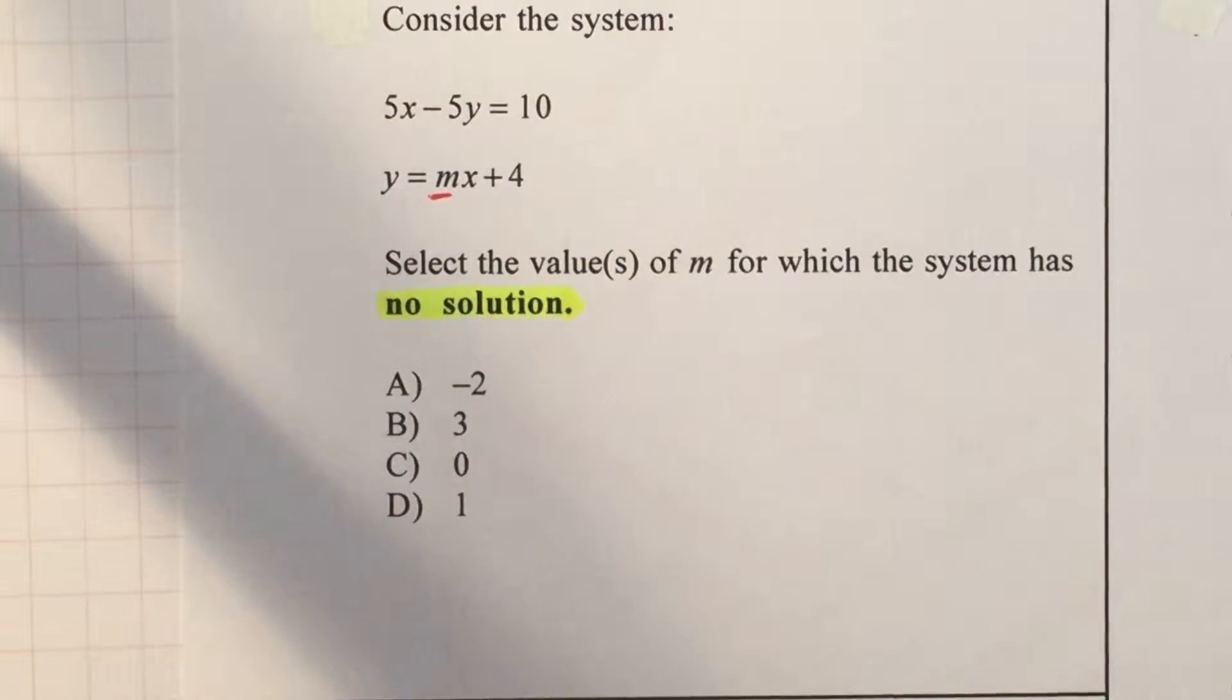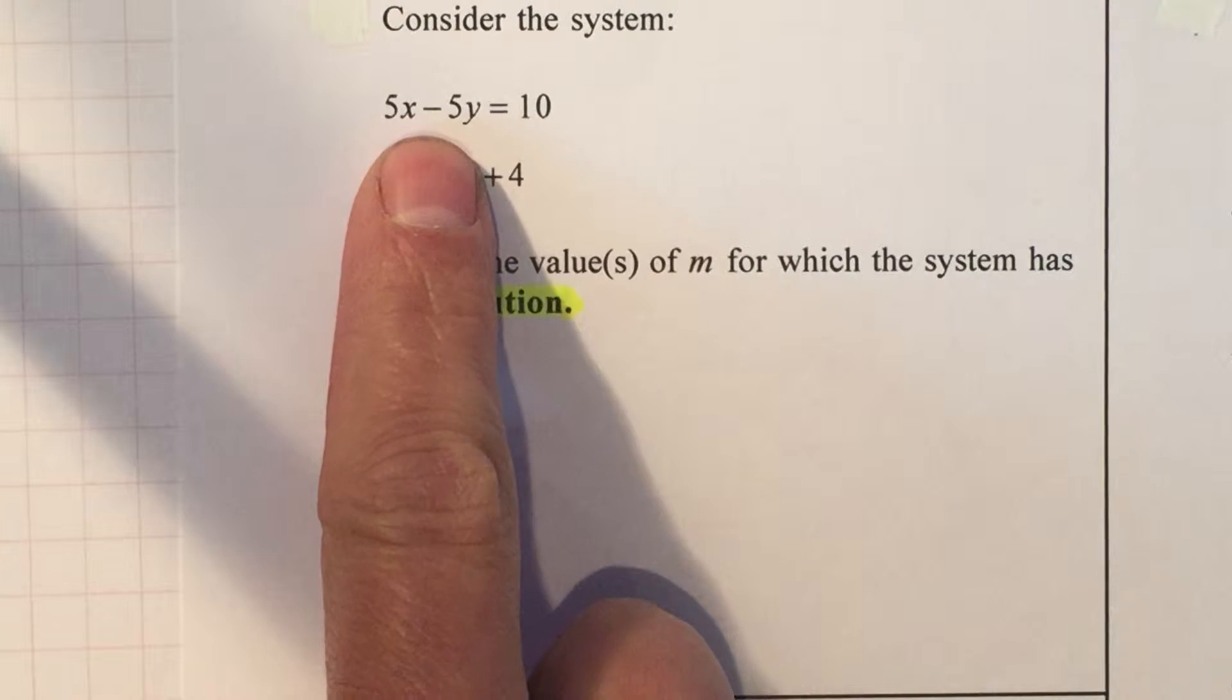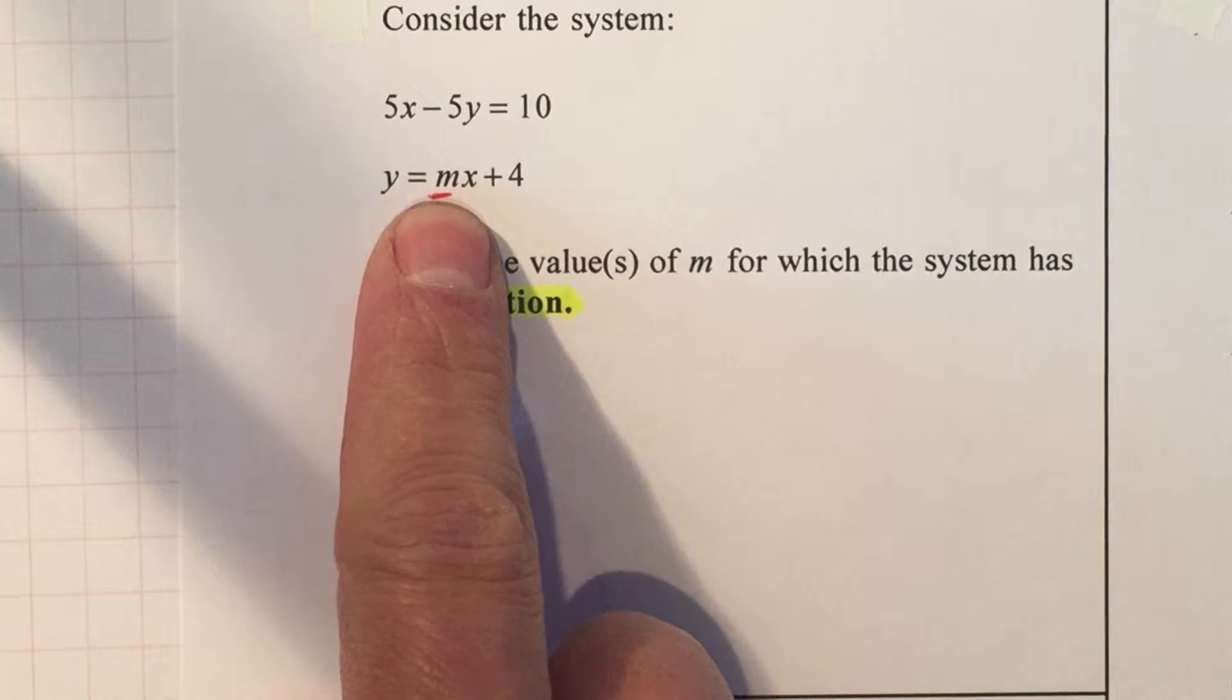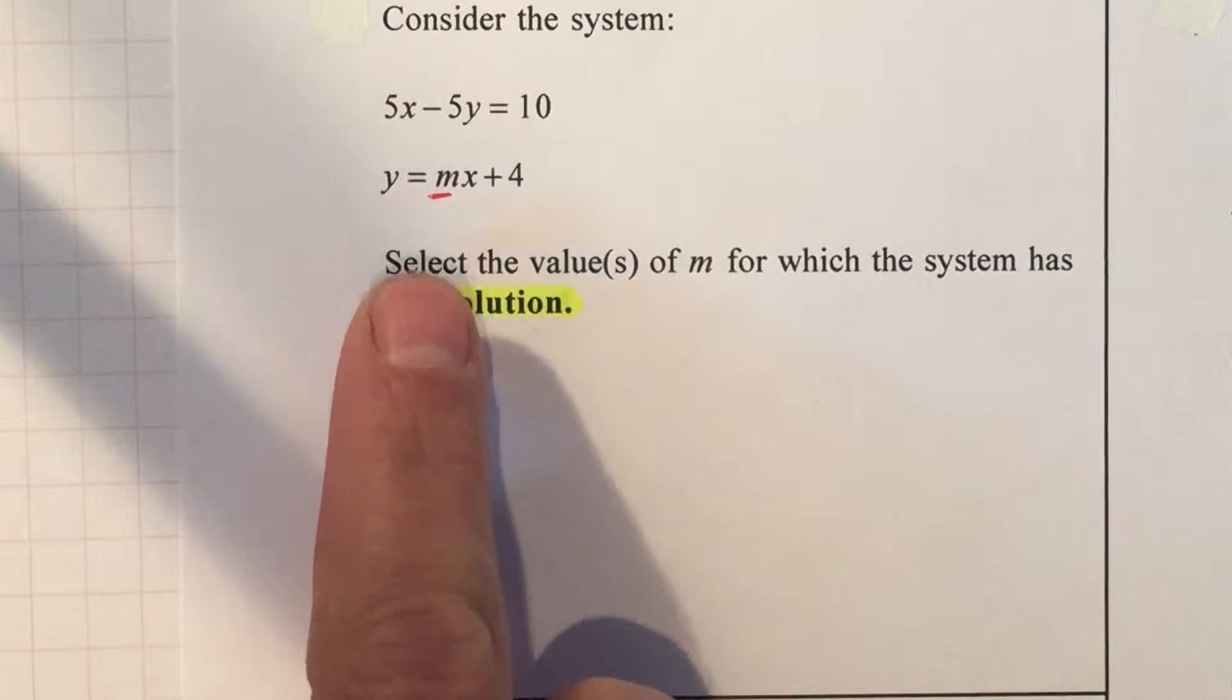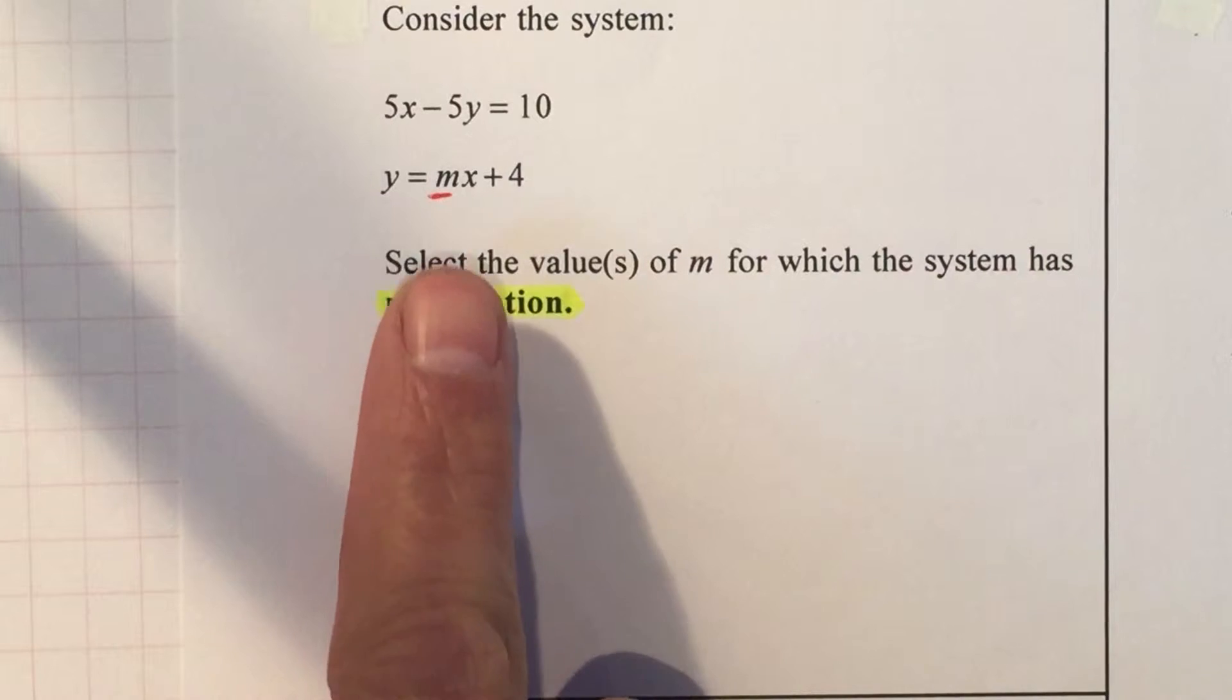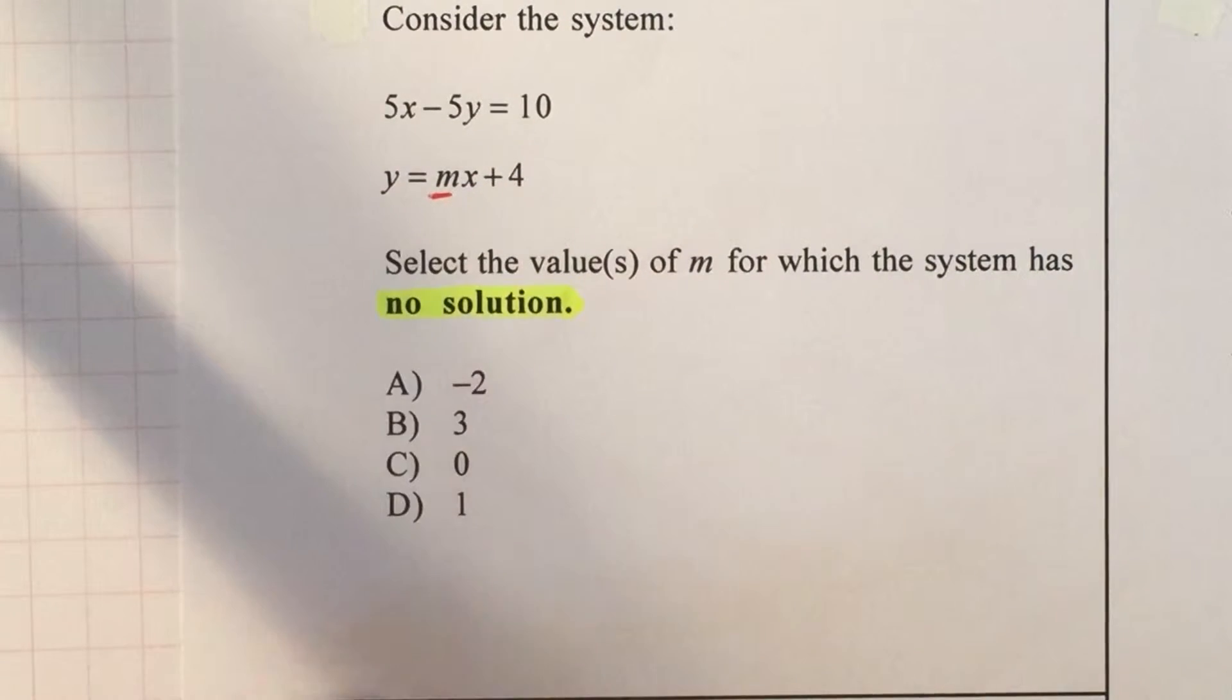There's two different ways of doing this. One is you can make them both y equals and you can compare the slope. Since no solution, the slope will have to be the same since the lines will have to be parallel. So one way is to make them y equals and your slope will have to be the same.